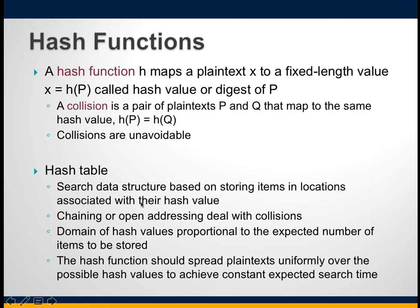There is a data structure called a hash table, which is a search data structure where you store items according to their hash values — essentially a key-value pair where the keys are hash digests. When collisions occur — two entries going to the same location — you can use chaining, where you build a chain at that point, or open addressing, where you probe through the table to find the next open location and place the hash value there.